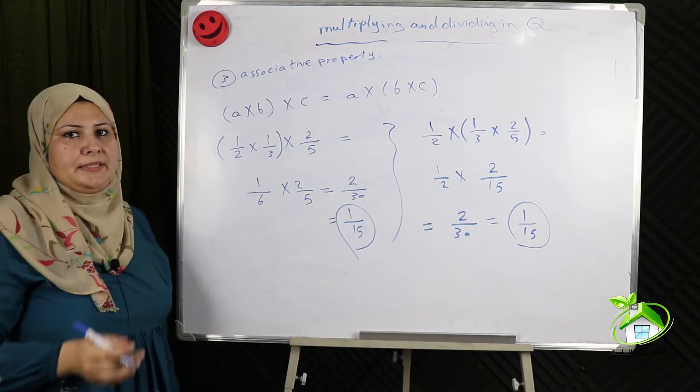Multiplicative inverse of a rational number: any rational number except 0 has a multiplicative inverse. If A over B is a rational number, its multiplicative inverse is B over A. For example, the multiplicative inverse of 2 thirds is 3 over 2, and vice versa — the multiplicative inverse of 3 over 2 is 2 over 3. Any rational number times its multiplicative inverse equals 1. Zero has no multiplicative inverse because 1 over 0 is undefined — division by 0 is meaningless.